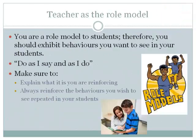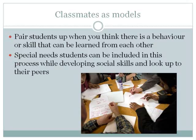Model what you want to see. As the teacher, you are the main role model in the classroom, so you should always exhibit the behaviors you want to see in your students — do as you do, not just as you say. Make sure to explain what you're reinforcing from the outset and always reinforce the behaviors you wish to see again. Classmates can also be models, so pair up students when a behavior or skill can be learned from each other — stronger students with weaker students, so they can model behavior and the weaker students can observe and imitate. Special needs students can also be included, as they are developing their social skills by looking up to peers, not just the teacher.